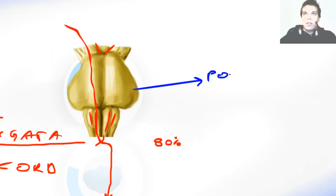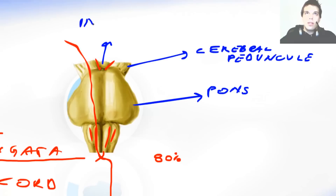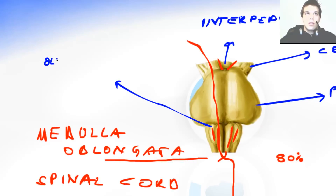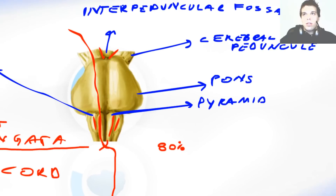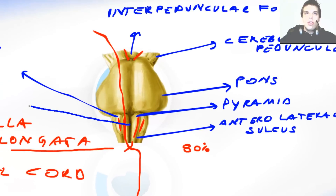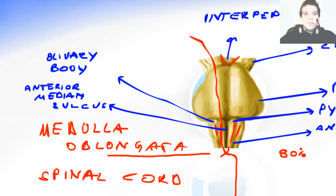Let me label what we've drawn so far. This was the pons. This was the cerebral peduncle. This was the interpeduncular fossa. Then we had the olivary body. We had the pyramids. This sulcus over here was the anterolateral sulcus, and this sulcus over here was the anterior median sulcus.